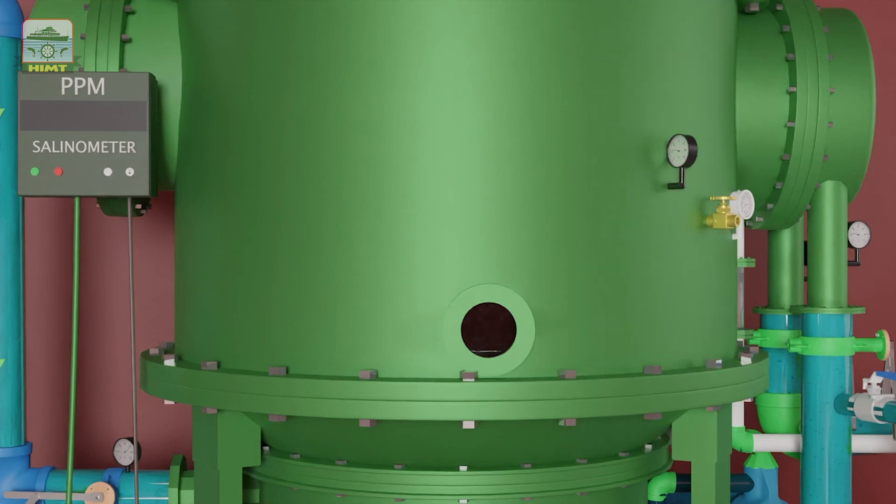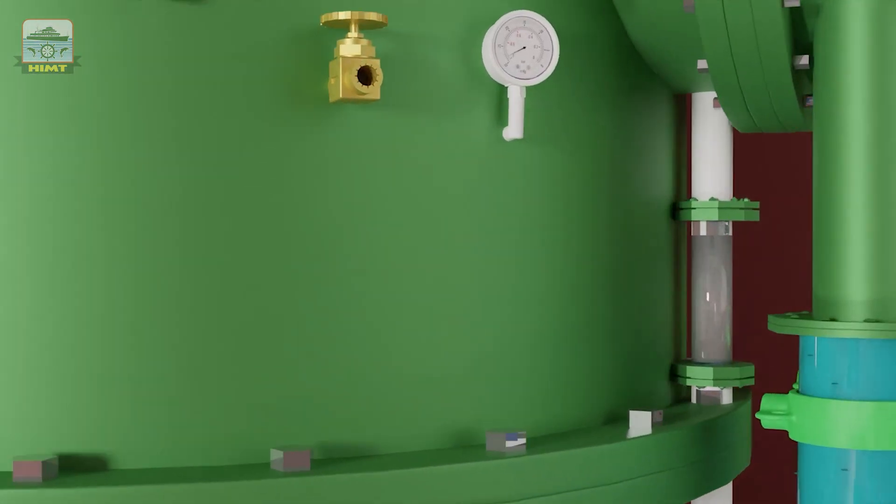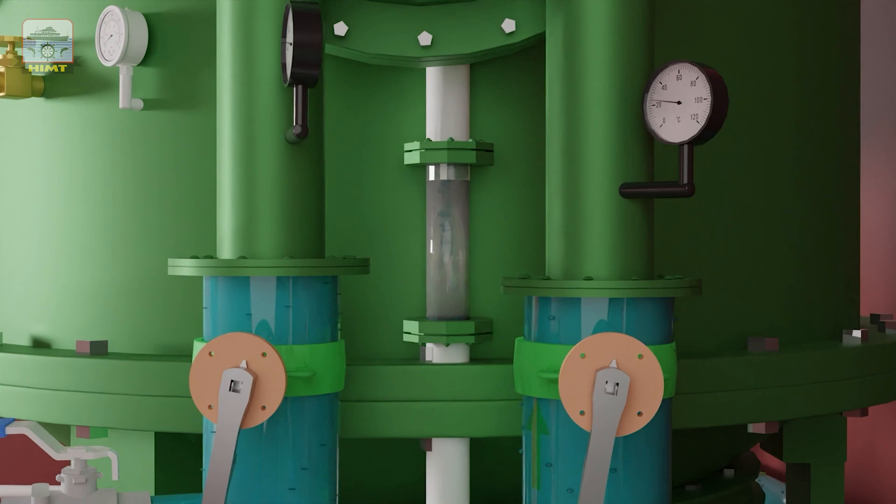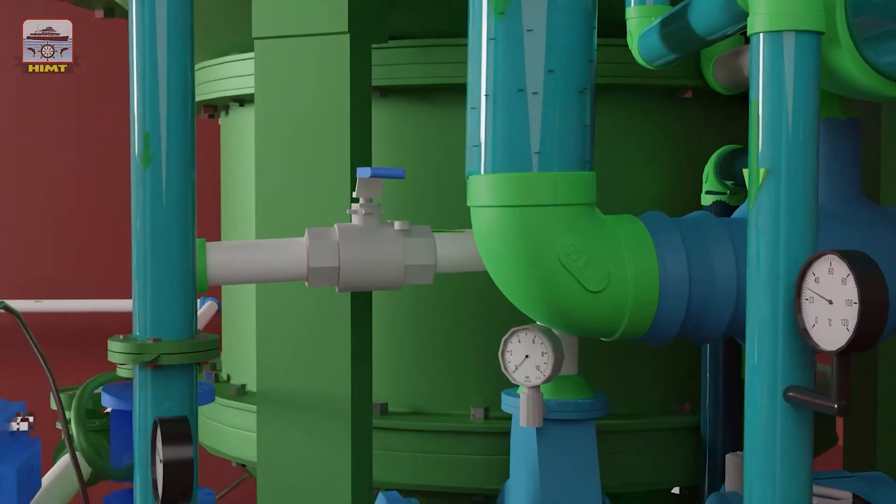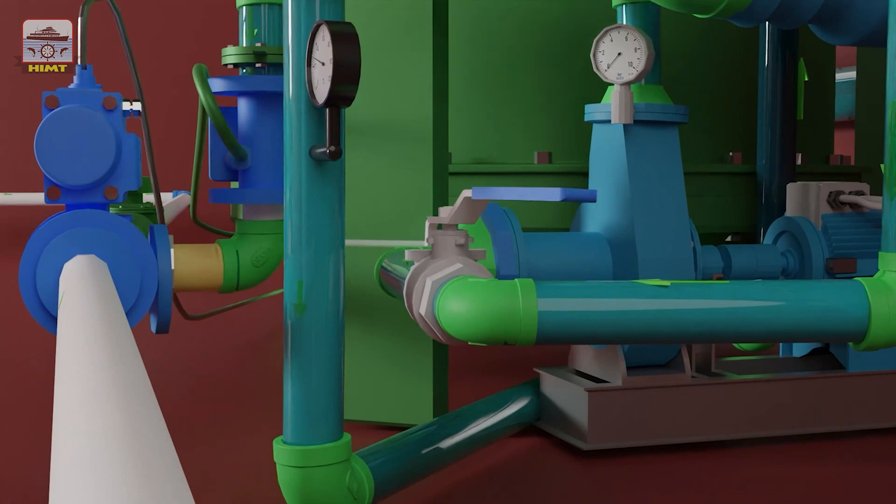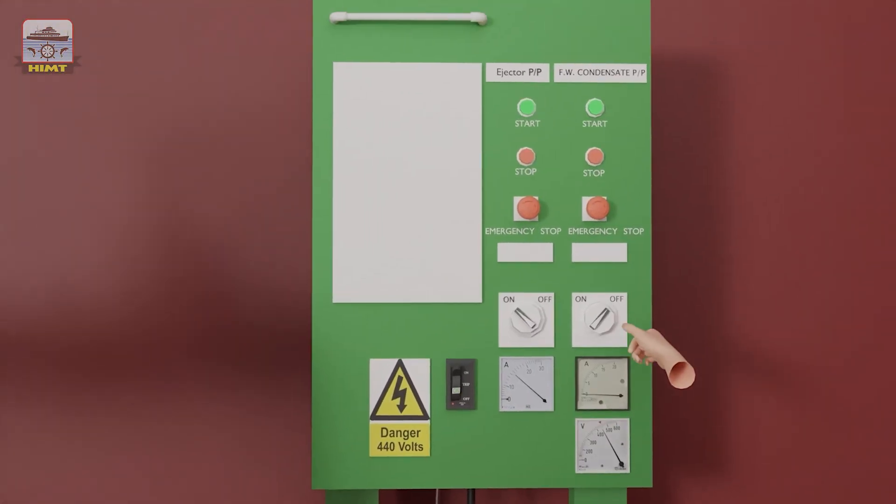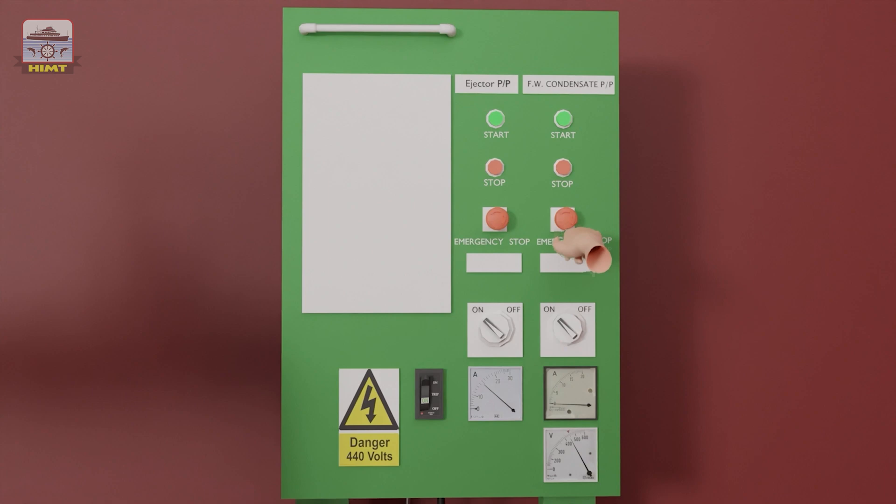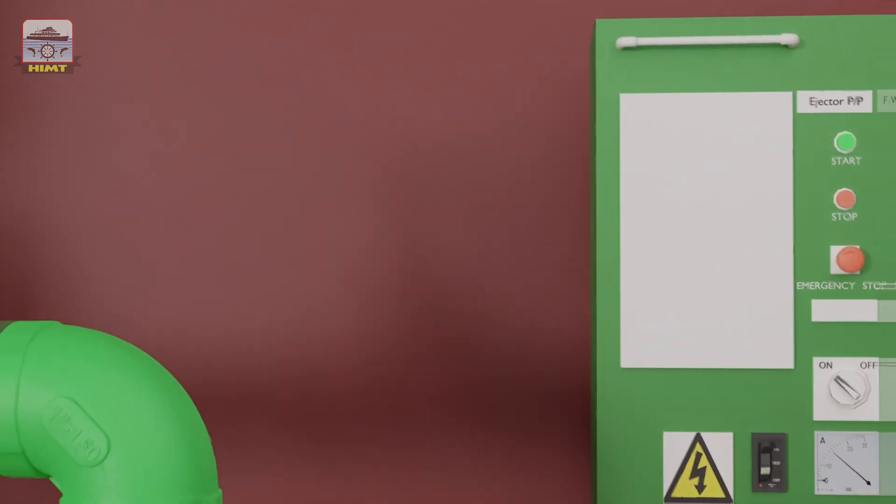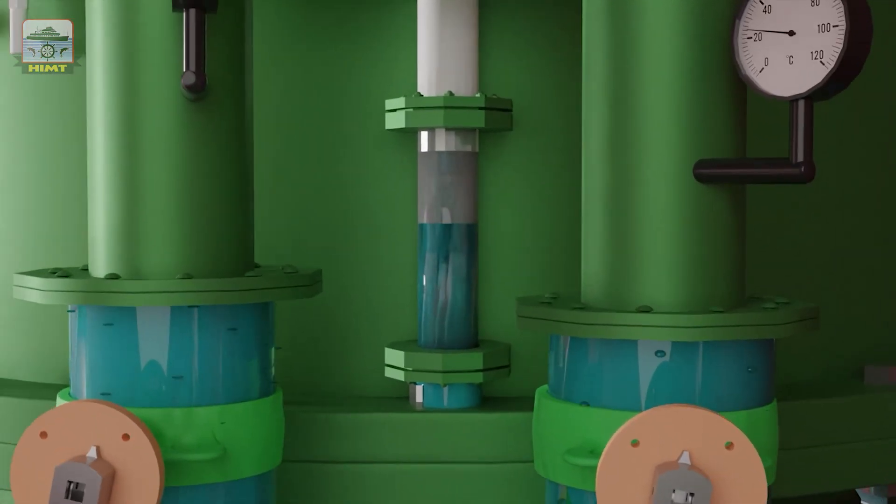As the steam comes in contact with the cooling water tubes, it gets condensed. When the sight glass in the distillate line is filled with the distillate, open the valves in the distillate line and start the distillate pump and monitor the ammeter reading. Now regulate the discharge valve of the ejector pump to maintain the water level at half of the gauge glass.